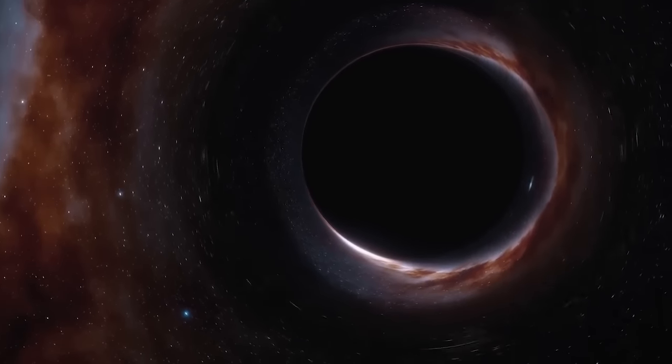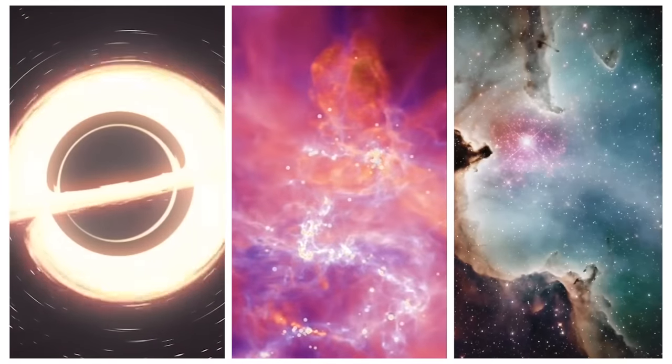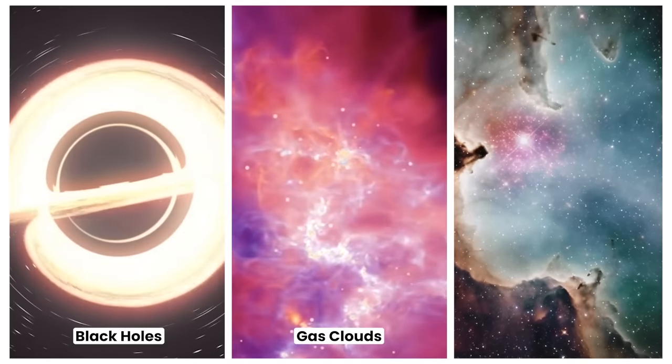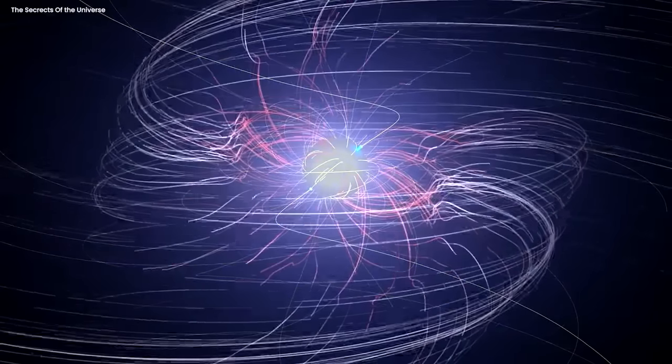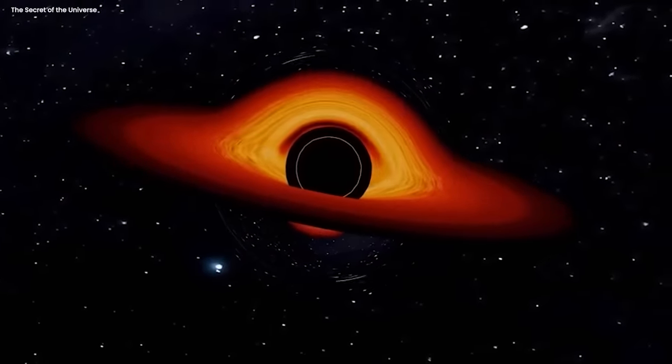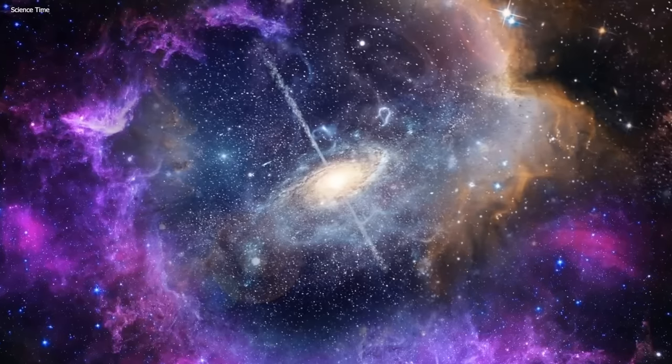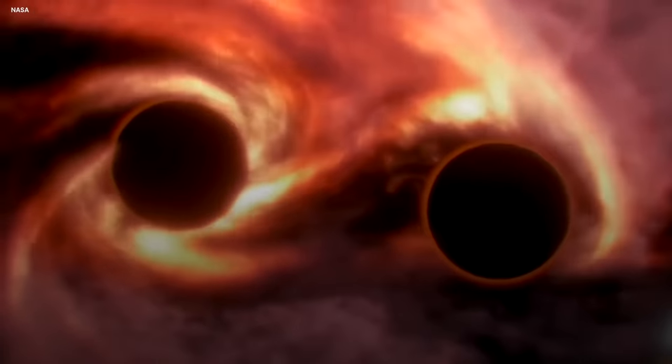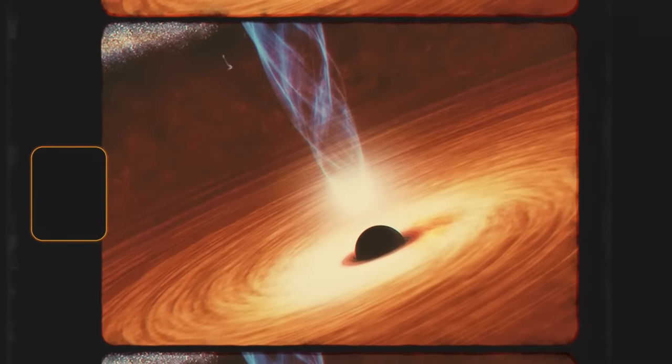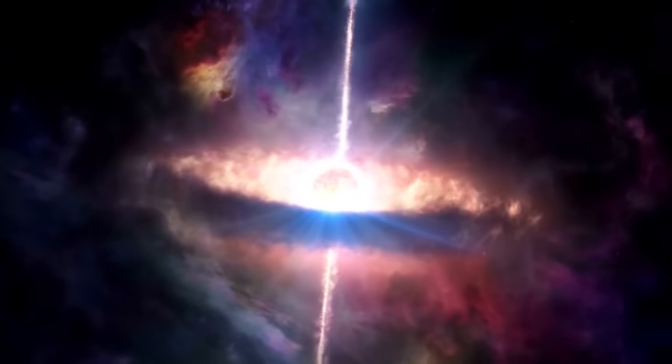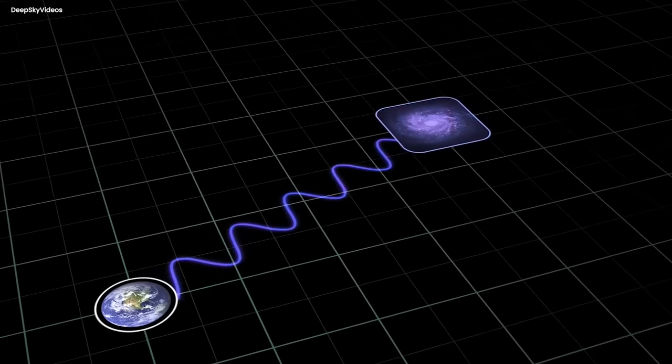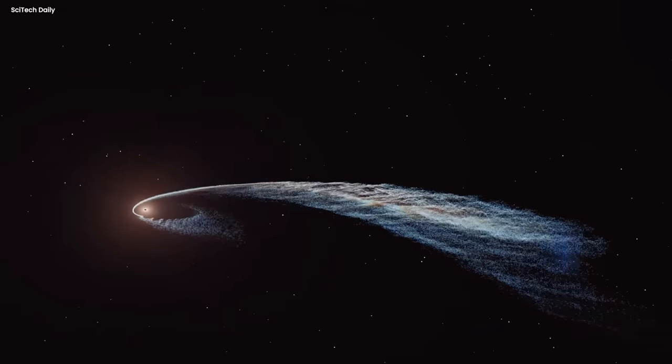The second formation scenario suggests that intermediate mass black holes form through the direct collapse of massive gas clouds in the early Universe. These gas clouds, which are dense aggregations of primordial matter, can experience rapid gravitational collapse leading to the formation of an intermediate mass black hole instead of a star. This process may have been more prevalent in the early stages of galaxy formation when gas concentrations were higher, which explains why stellar black holes are more common in the present era. Detecting intermediate mass black holes is an exceptionally challenging task due to their mysterious nature and limited numbers. However, their presence has been indirectly detected through the study of the dynamics of stars and gas in their vicinity.